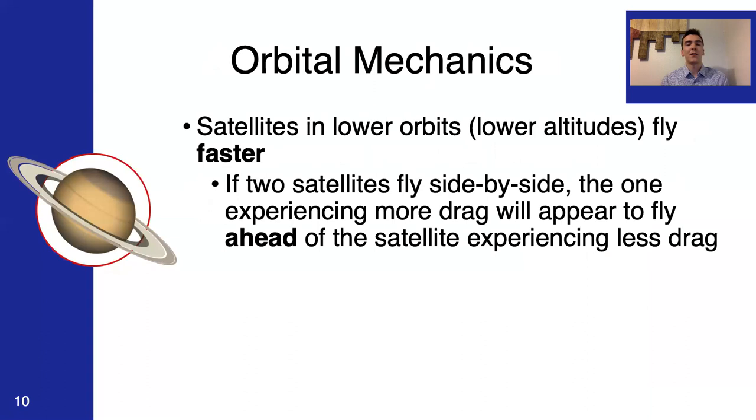It's important that we understand a little bit about the basics of orbital mechanics. One thing that's really important to understand is that satellites in lower orbits or lower altitudes will fly faster than those in higher orbits. This is a really crucial concept, and it's kind of counterintuitive, you know, at first glance. So, if two satellites are flying side by side and one experiences drag and the other experiences less drag, we would expect logically in our heads that the satellite experiencing more drag would fall behind. But instead, in space, it'll appear to fly ahead of the satellite experiencing less drag.